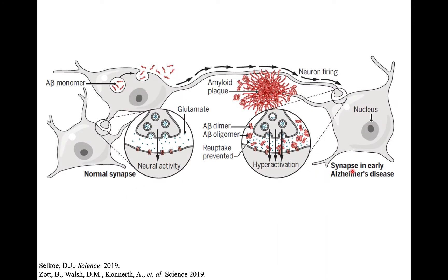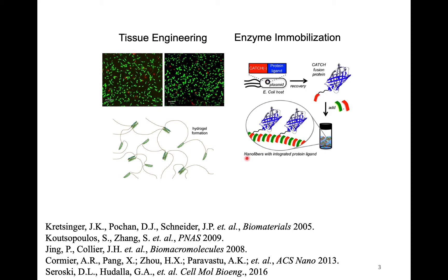Why do we study pathological aggregation? Because it's pathological. This is a diagram of what happens in Alzheimer's disease as far as we understand it. The A-beta or amyloid beta peptide is created on the surface of neurons and it forms various nanostructures. The largest results in plaque deposits in the brain, which is the most obvious sign of Alzheimer's disease. But there are also smaller aggregates — oligomers or nanoparticles — that are considered especially toxic. So we'd like to understand the structures and how we might be able to prevent neuronal damage.